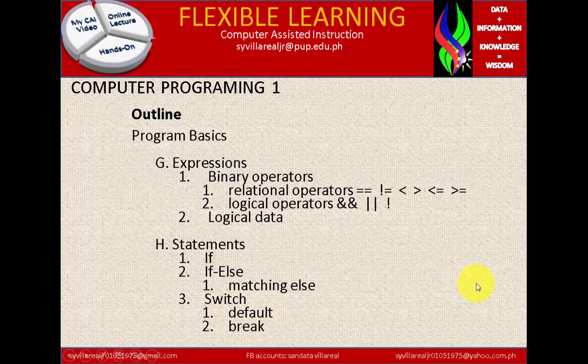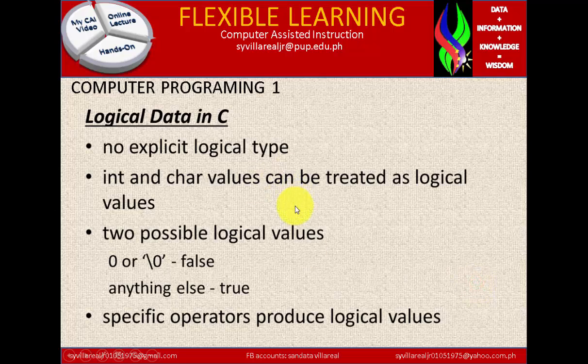Now let's continue. Logical data in C is considered to have no explicit logical type, because logical is considered to be true or false only. Integer and character values can be treated as logical values. So you are going to use integer and character data type. So do not use floating numbers, double, something like that.